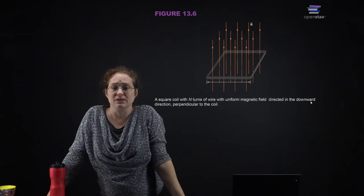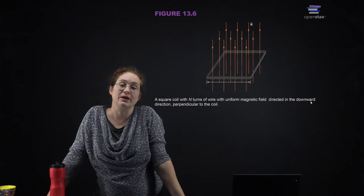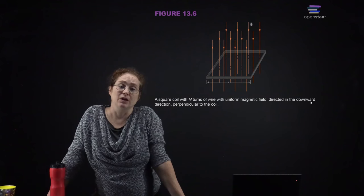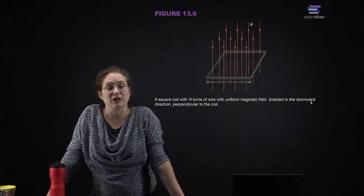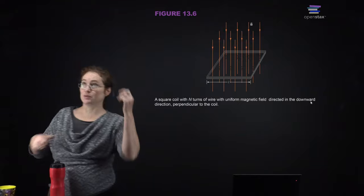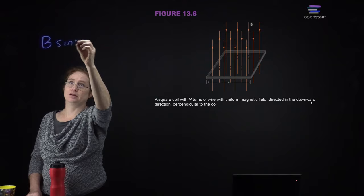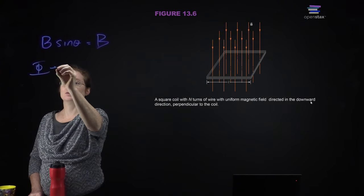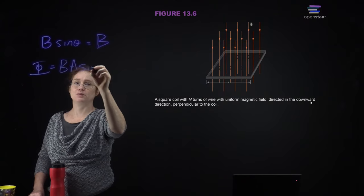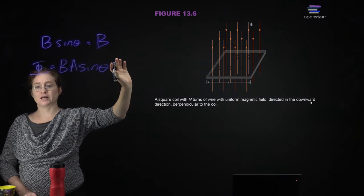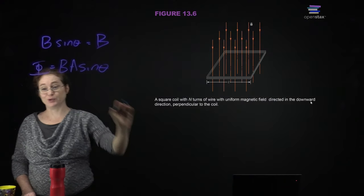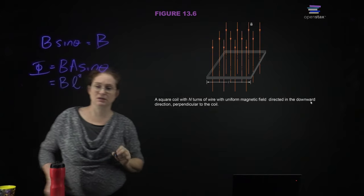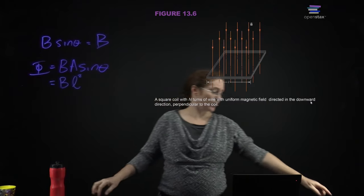Here you can see a square coil of wire with a bunch of different turns. The magnetic field is perpendicular to the surface of the coil, so the magnetic flux is going to be at its maximum. B sine theta is simply B because theta is 90 degrees. Then we multiply by the area. Our flux, which is B times the area times the sine of the angle between the normal vector to the surface and the magnetic field, equals the magnetic field times the length squared for this square coil.